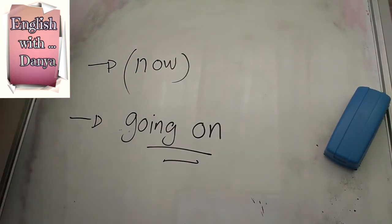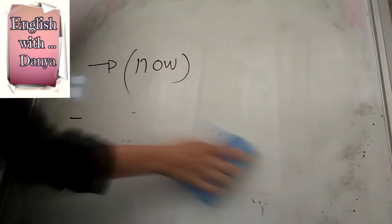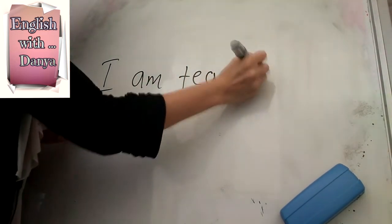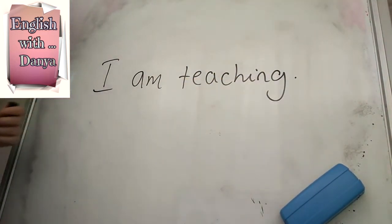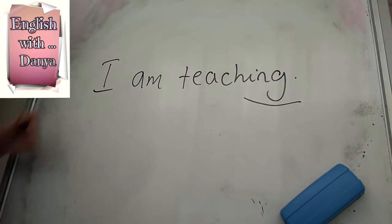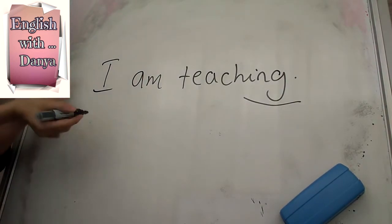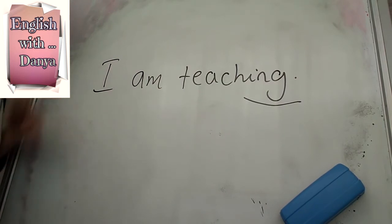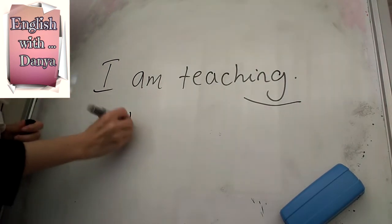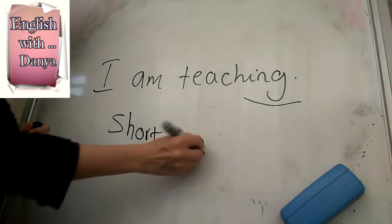What do I mean by 'right now'? For example, what am I doing right now? I am teaching. Notice I have the '-ing' ending — that is the most important thing to remember. In this case, 'I am teaching' means at the moment of speaking, right now, I am teaching. This is considered a short time, or 'now.'